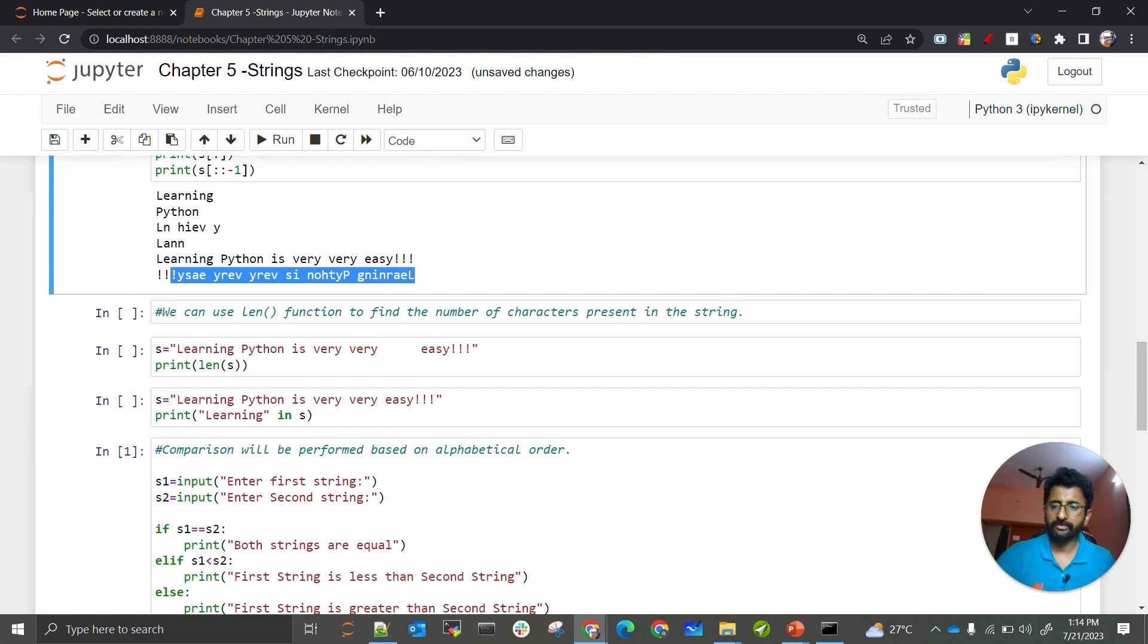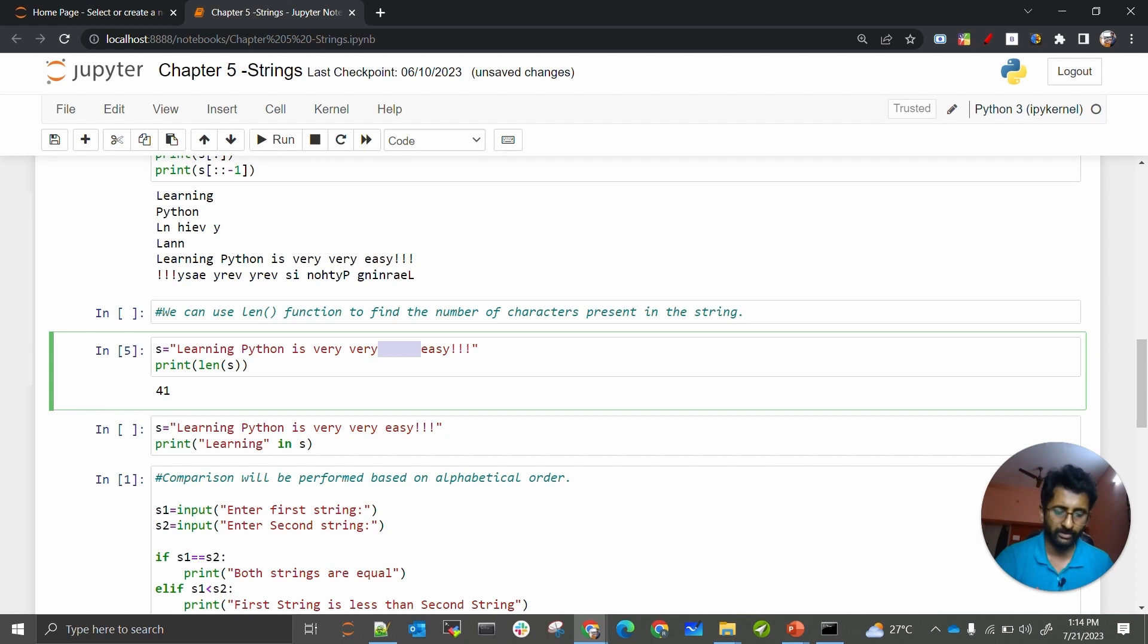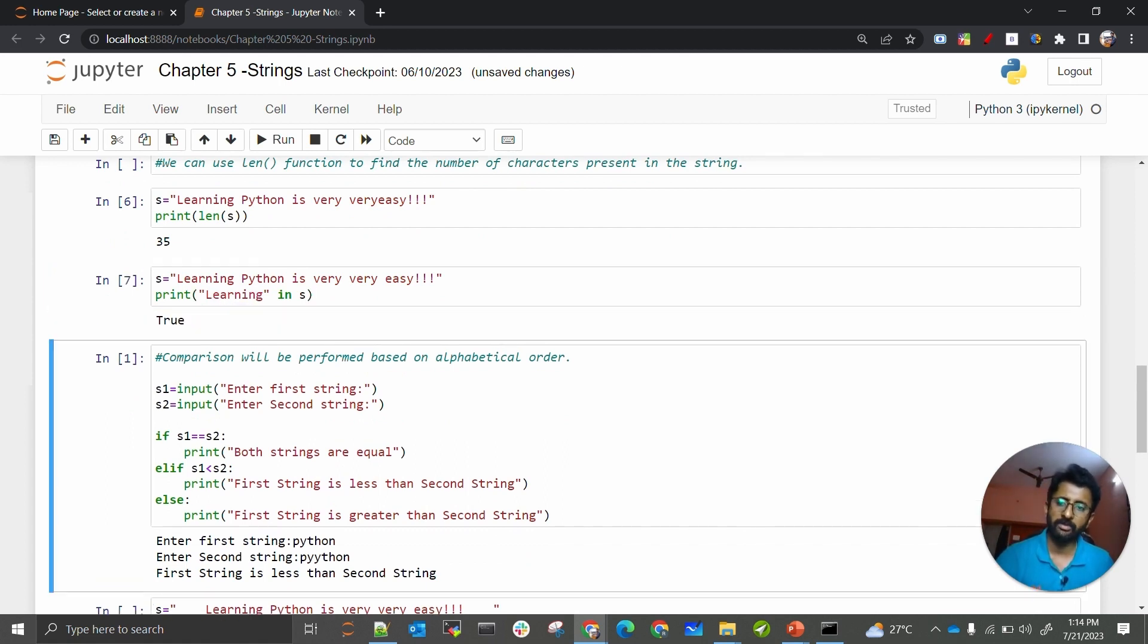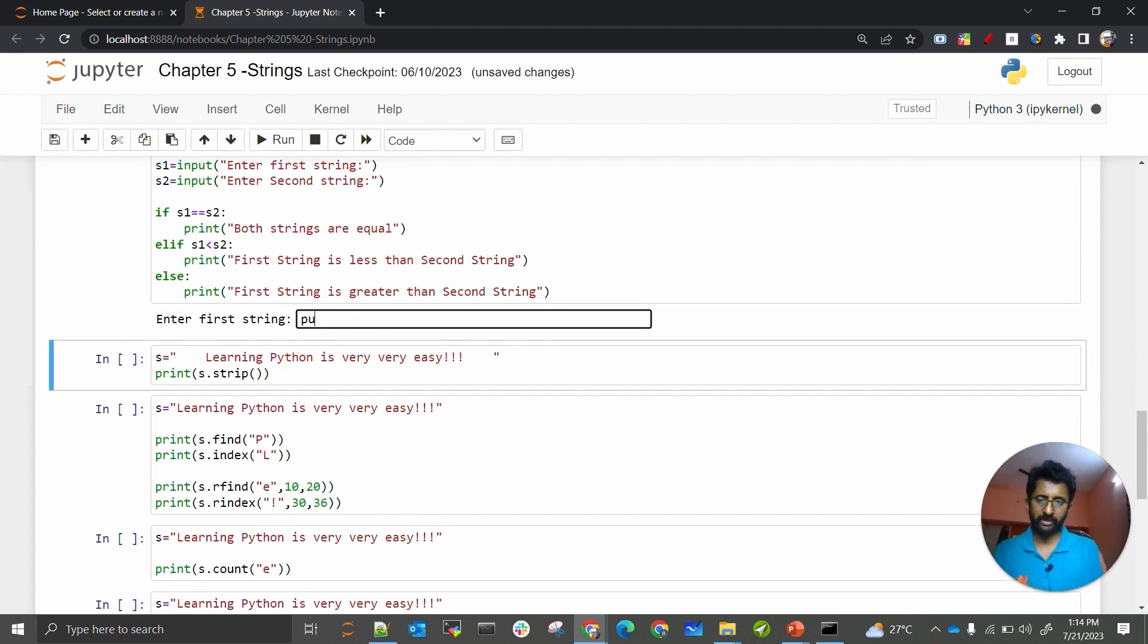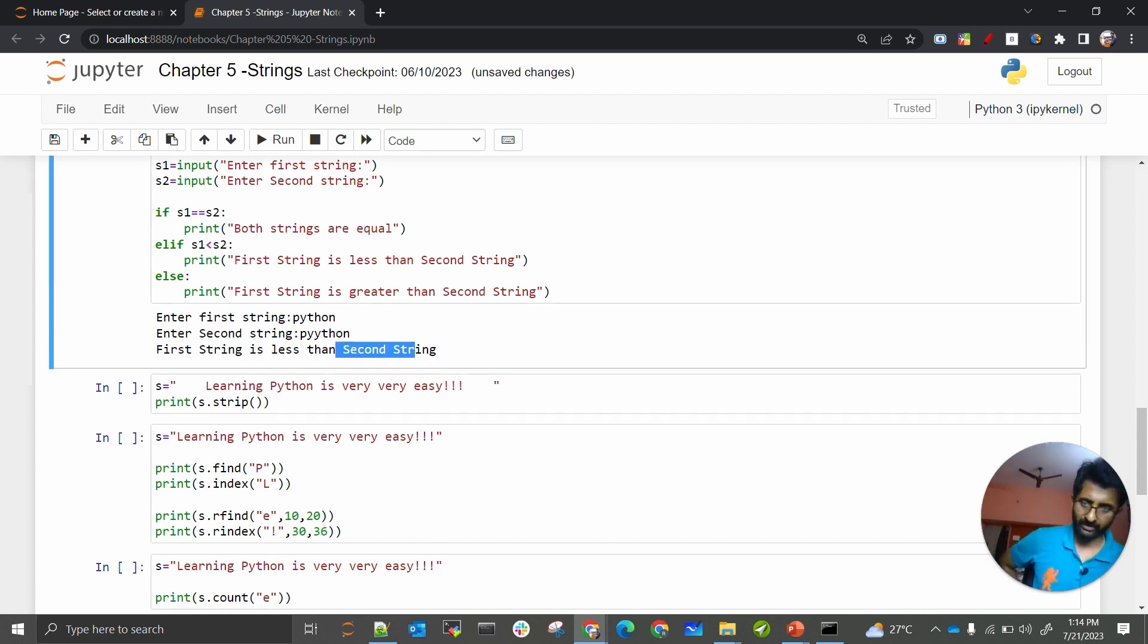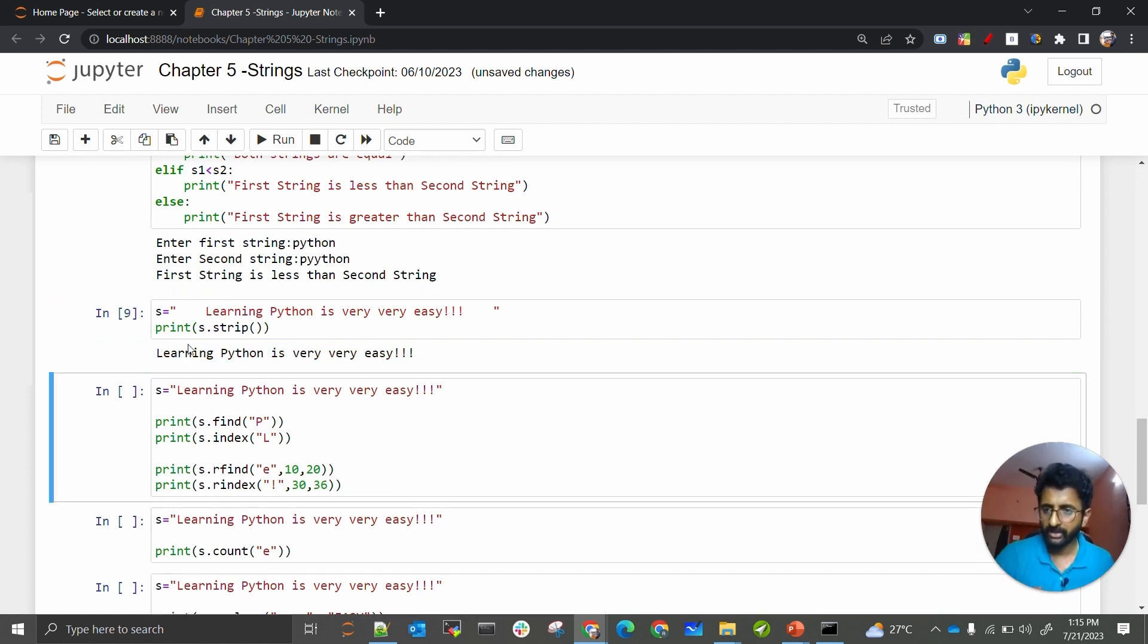After that, we are doing length of it. See all those spaces are there, so I am doing this length operation. These spaces are also counted in length operation. Then I am saying this is membership operations, if this is present, then we are checking. See if comparing the strings, if I am giving python first and then I am giving p double y, p h o, then the second should be greater than first. So this way we can compare the strings.